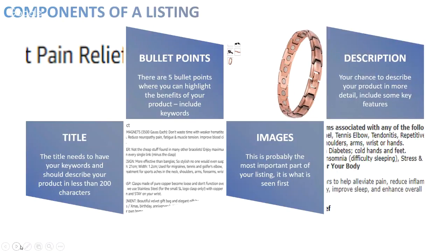Then we've got the description. You've got 2,000 characters to describe what the product does in more detail and include some of the features. Previously we were talking about benefits — the description is a good place to add some of the features.